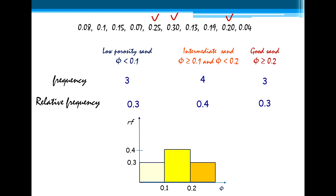We can also represent this relative frequency in terms of a diagram. We can put on the x-axis the porosity class values, and on the y-axis we can put the relative frequency. And this is called a histogram.